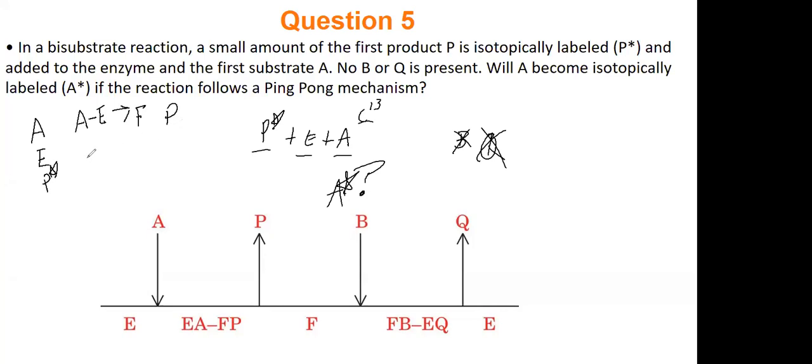Well, what can happen then is that our labeled product can interact with the enzyme version of F we just made and make A that is labeled plus enzyme version E. So in this mechanism, and in any enzyme really, you can go backwards, right?